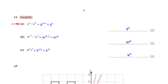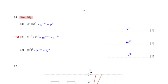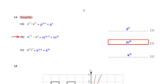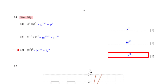Simplify p² × p⁴. Since the terms have the same base and are multiplying, their powers add. For m¹⁵ ÷ m⁵, since the terms have the same base and are dividing, their powers subtract: 15 − 5 = 10, giving m¹⁰. Simplify (k³)⁵: the powers of k multiply, so 3 × 5 = 15, giving k¹⁵.